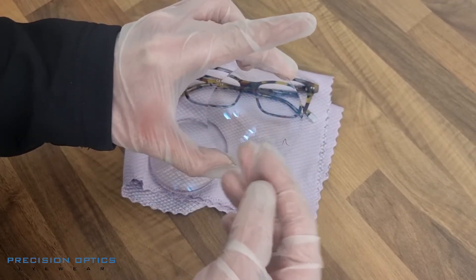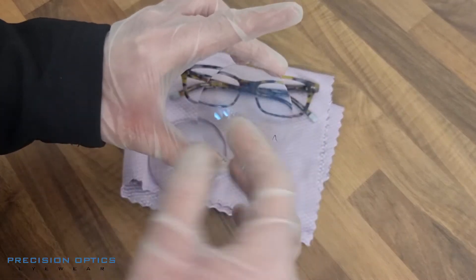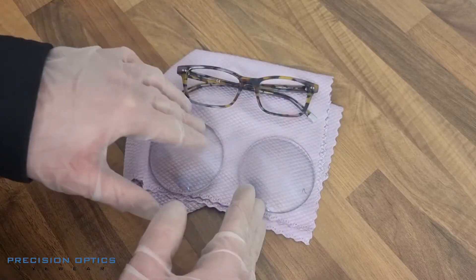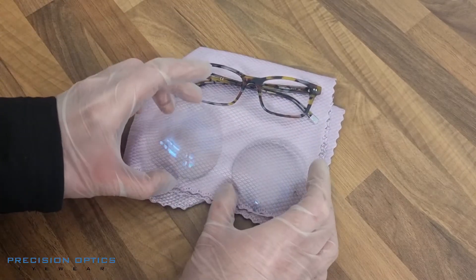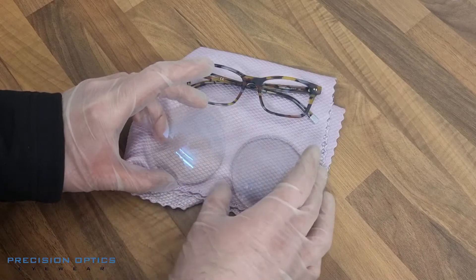They have a scratch resistant coating and they're smudge resistant and hydrophobic as well, which helps water disperse off the lenses if you're out in the rain or they get wet. So great lenses. You will notice a slight mauve purple color to them that will change when we get to the end of the glazing process.